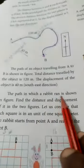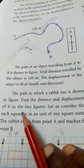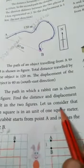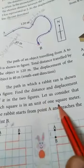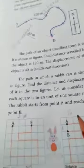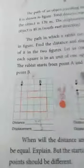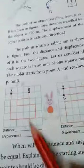Activity: The path of a rabbit is shown in the figure. Find the distance and displacement. Consider that each square represents one square meter. The rabbit starts from point A.